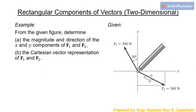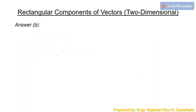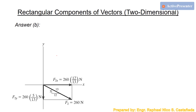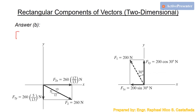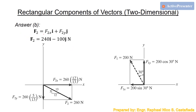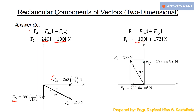For Part B, the Cartesian vector representation uses F = Fx·i + Fy·j. Substituting the values from Part A: F2 = 240i − 100j, and F1 = −100i + 173j.